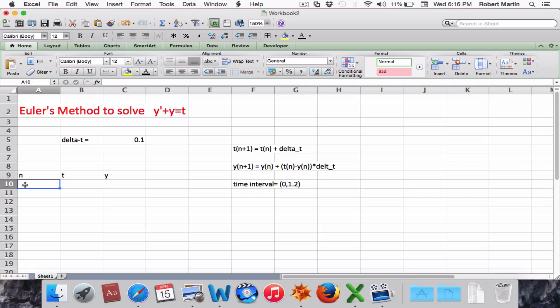So n will start with 0, time values start at 0, and y, our initial condition, is y is going to be 0.5.